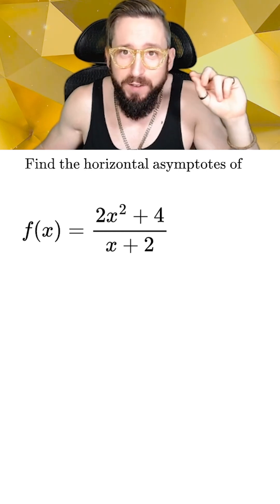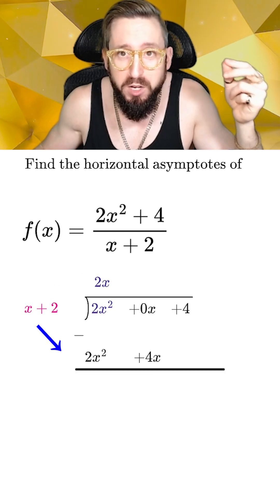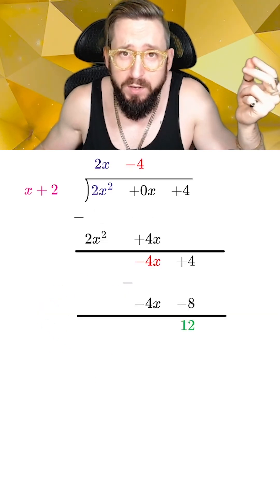In this example, the highest effective power is two on the top and one on the bottom, which is a difference of one. So we're going to rewrite this fraction by doing polynomial long division.